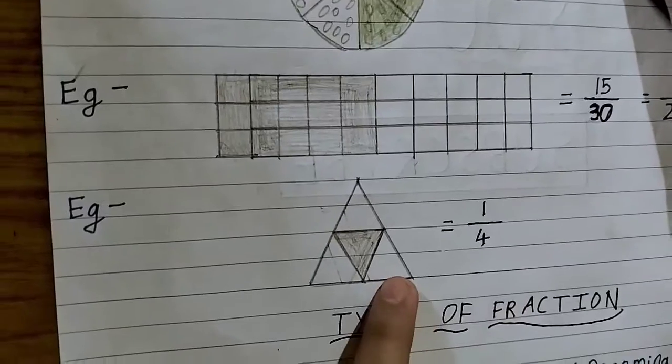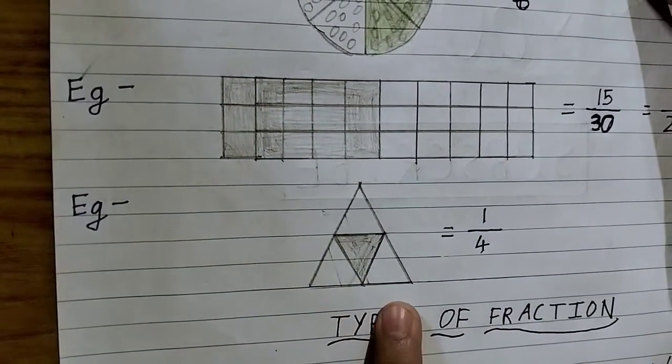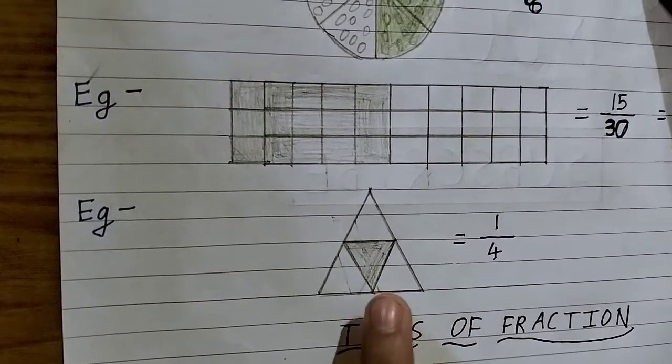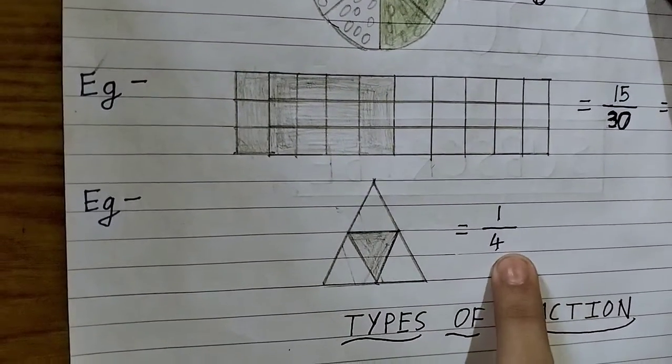This is the last example. Here we have a triangle and this triangle has total 4 parts and I have shaded 1. It will be 1 by 4.